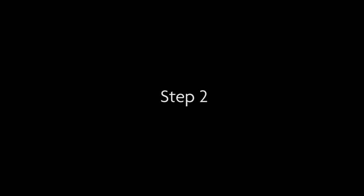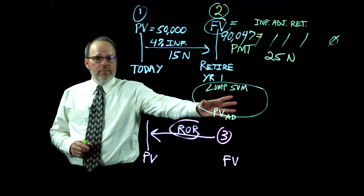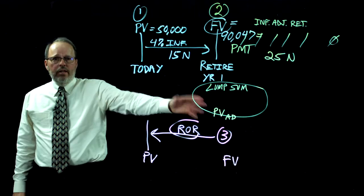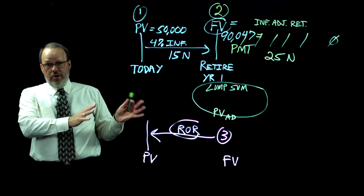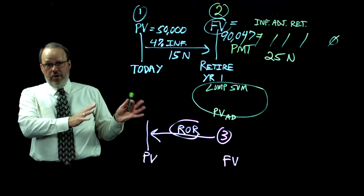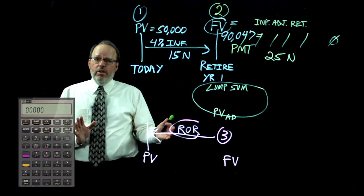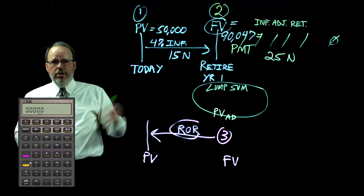Now we're ready for step two. We determine what lump sum — what present value — do we need at the beginning of retirement to fund Kim's retirement benefit for 25 years. Prior to this calculation, set up the calculator carefully: be in begin mode, set up for one compounding period per year, do the clear all, and confirm one period per year is shown. Kim will need the money at the beginning of each year.